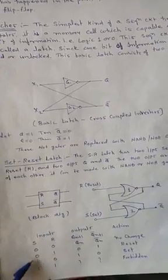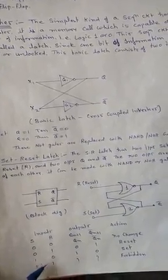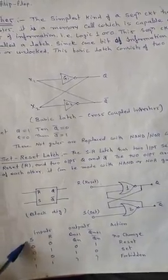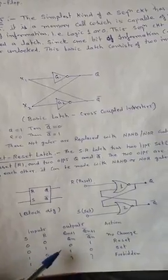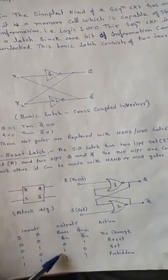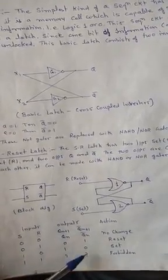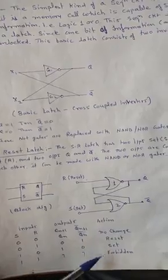In third case, S is 1 and R is 0. S is 1, S is the set input, so the output Q is 1 and Q bar becomes 0. This is set action.